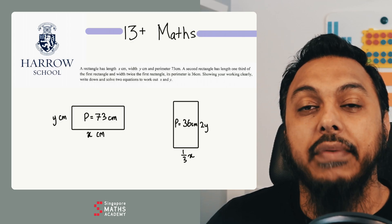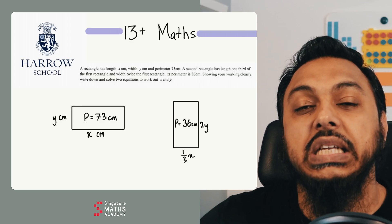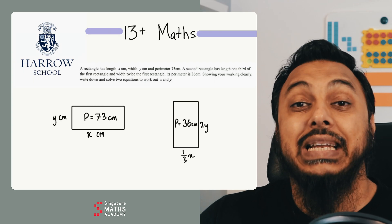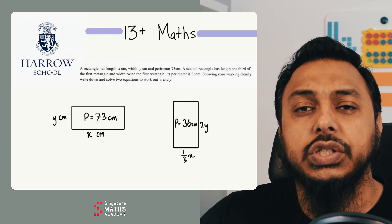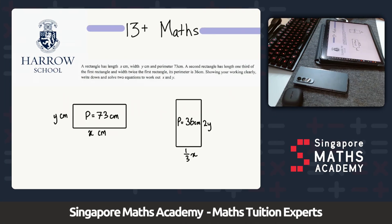Hey everyone, welcome back to Singapore Maths Academy. We're going to go through a 13+ question found in Harrow School, which is a very challenging school to get into. The first rectangle has length x centimeters, width y centimeters, and a perimeter of 73 centimeters. A second rectangle has a length that is one third of the first rectangle and a width that's twice the first rectangle, and its perimeter is 36 centimeters.